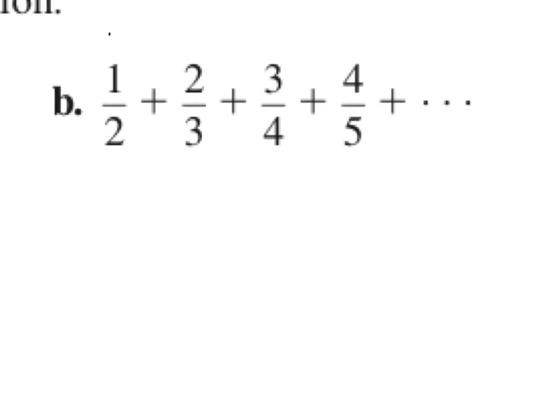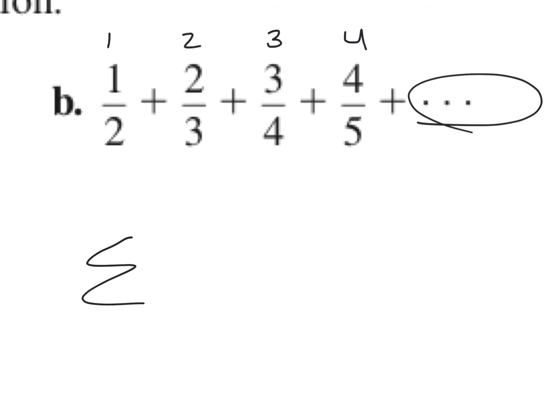For part B, we have term 1, term 2, term 3, term 4, and then dot dot dot — so we know this is going to go on to infinity. We draw our summation and put infinity on the top. We start at 1, so i equals 1. Whenever it's a fraction, it helps to take the top and bottom one step at a time. Let's just look at the top numbers of our fractions here.